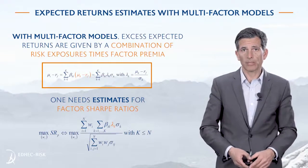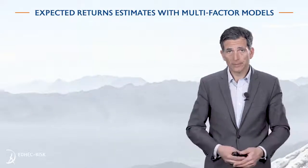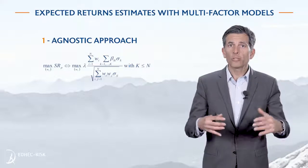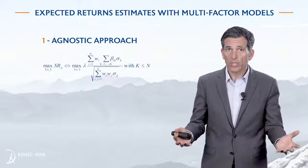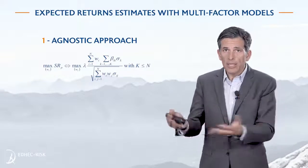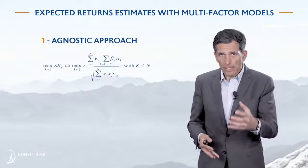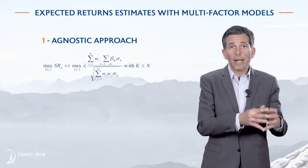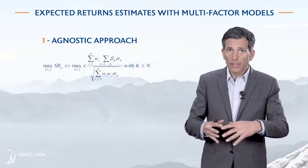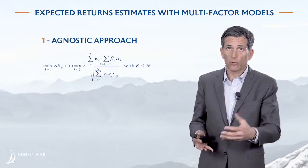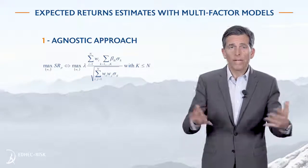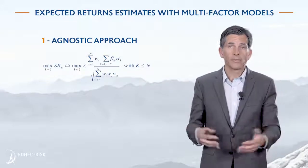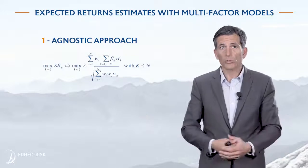What do we do in terms of estimating these expected returns? There are different options. Option number one is an agnostic approach: if you don't know how to distinguish between factors in terms of expected returns, you might assume they are all equal. A more refined version of the agnostic prior assumes that all factors have the same Sharpe ratio — the same reward per unit of risk. You are giving up on trying to distinguish which factor has the highest reward per unit of risk, saying the data is not very informative, so you assume they are all equal.